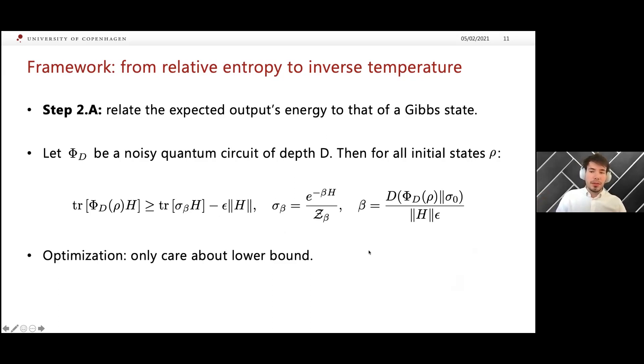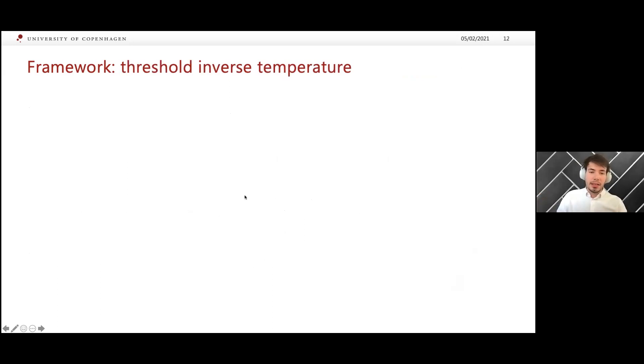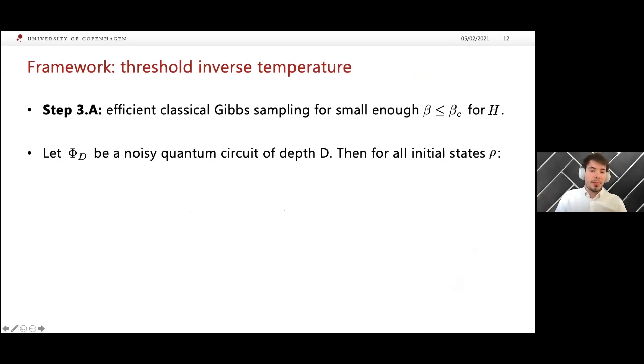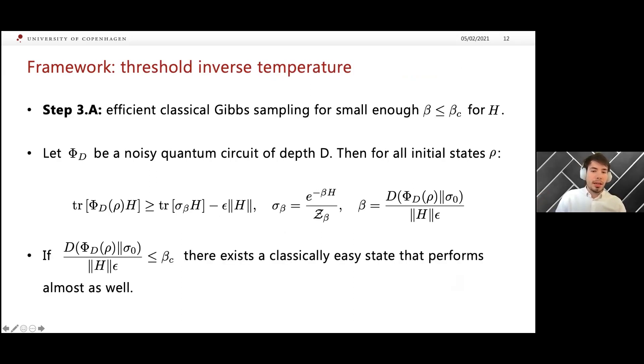Let's go to the first step of the method. Now that we assigned an inverse temperature at each step of the computation, for many problems we care about, people have studied for which range of betas you can actually sample from this Gibbs state efficiently. In particular, if this ratio over here is below a certain threshold inverse temperature, then this state over here, which we can easily prepare on a classical computer, performs almost as well.